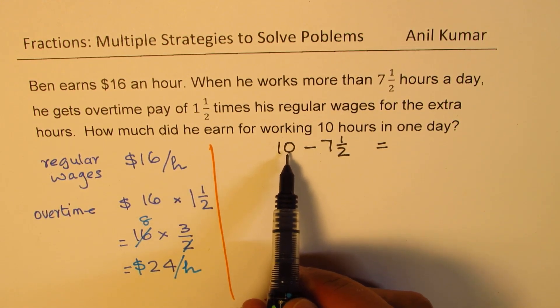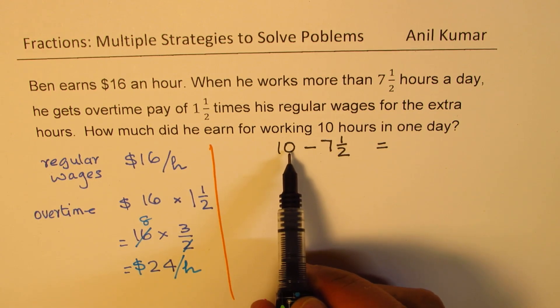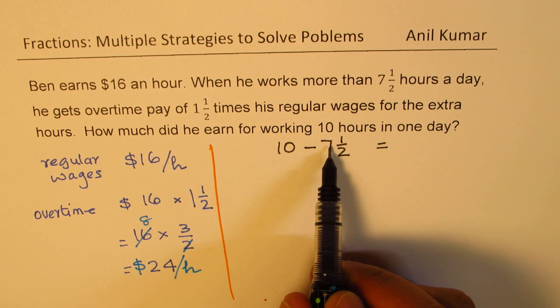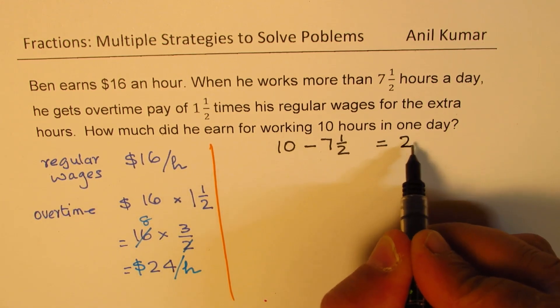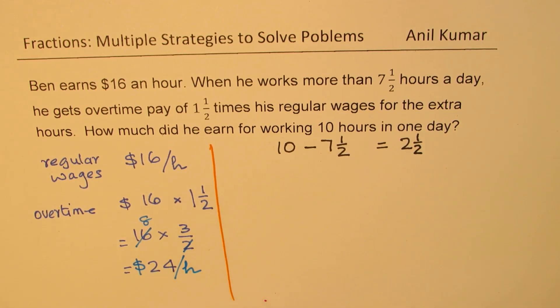So one way of doing it is kind of like this. So from 10, if I take away half, I have 9 and a half. And then I take away 7, I get 2 and a half. So I get 2 and a half. This is one way of doing it. Is that clear to you? So one way is this.